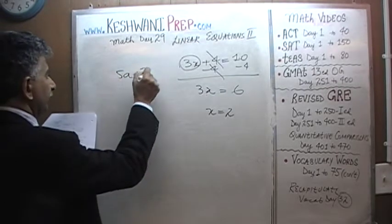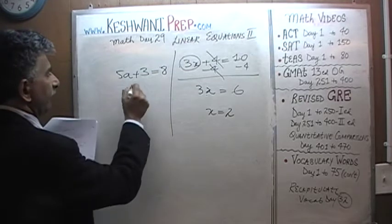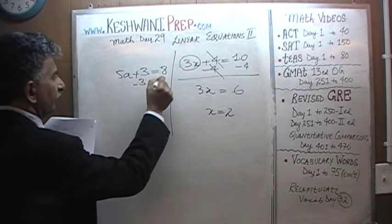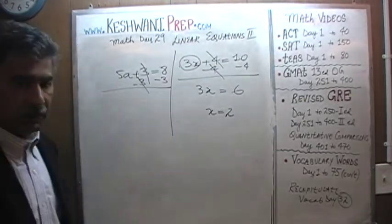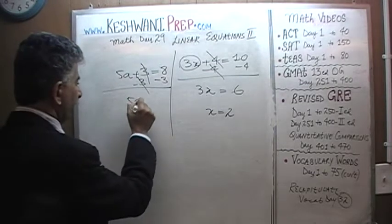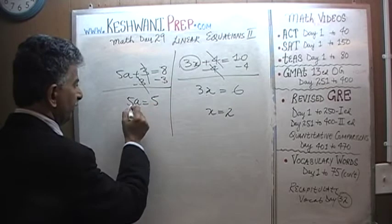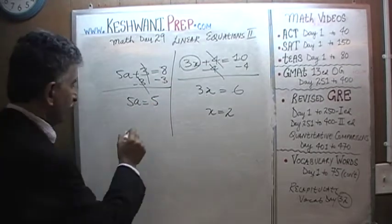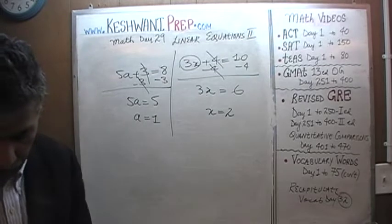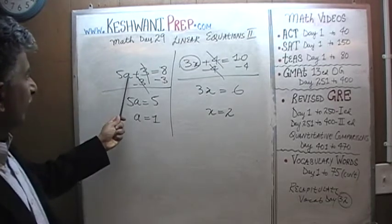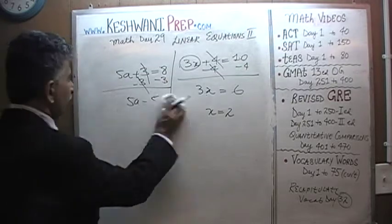5a plus 3 equals 8. Subtract 3 from both sides as always — bring the number to the other side. So 5a equals 8 minus 3 which is 5, and therefore a must equal 1. And again you can quickly verify: 5 times 1 is 5. 5 plus 3 is 8, which is what we have there. Let's do the next one.